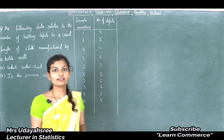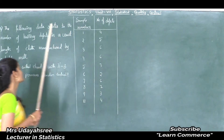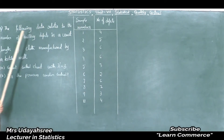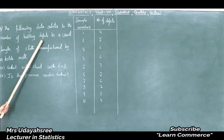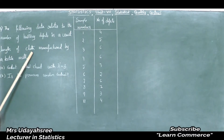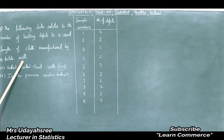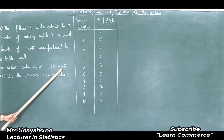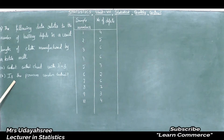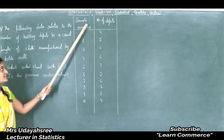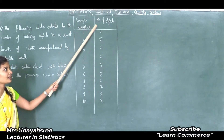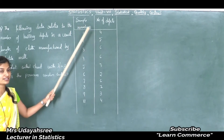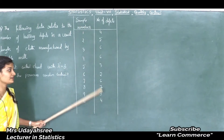Let's see problem number 8. The following data relates to the number of knitting defects in a unit length of cloth manufactured by a textile mill. The first sub-question is to construct a control chart with lambda dash equal to 3, and the second sub-question is: is the process under control? Here, sample number and number of defects are given in the question.